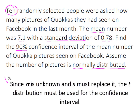Since the population standard deviation, or sigma, is unknown, we're going to substitute the sample standard deviation for it, and we're going to use a t-distribution with n minus 1 degrees of freedom when we construct this confidence interval.